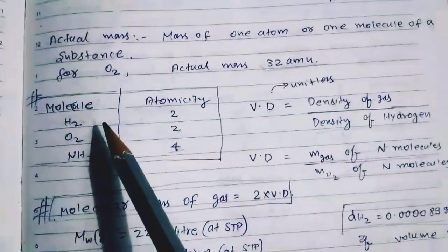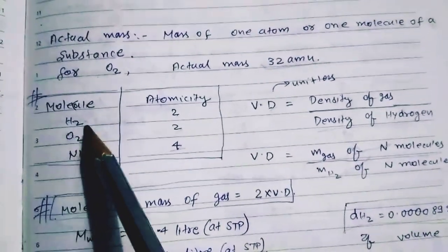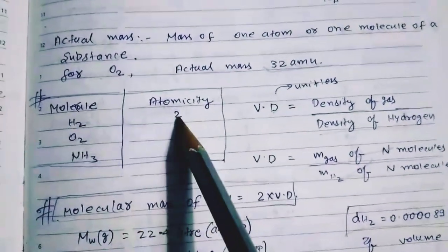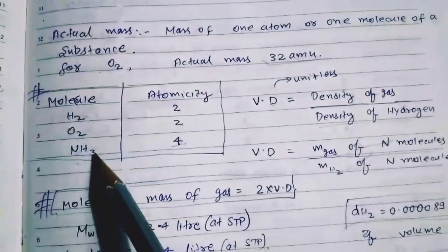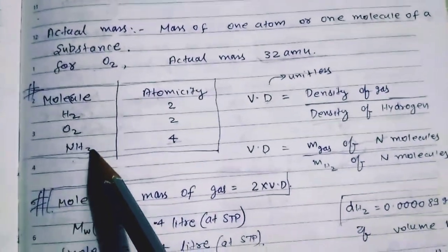Hydrogen में number of atoms कितना है — hydrogen में 2 होते हैं, तो H₂ में 2 हो जाएगा। Ammonia का कितने atoms से बना है — nitrogen का 1 और hydrogen का 3.